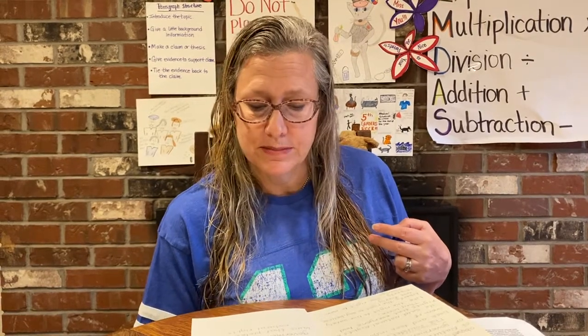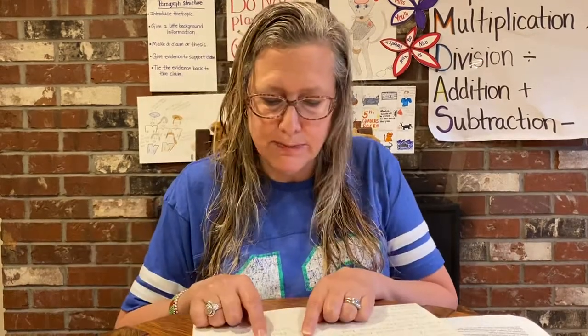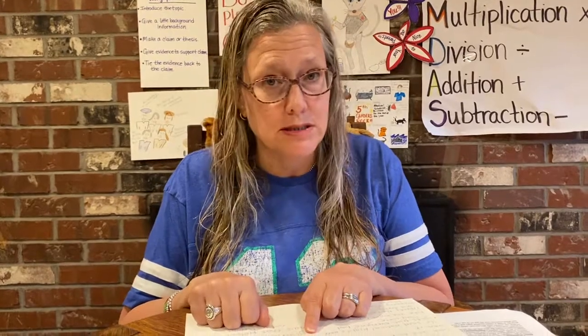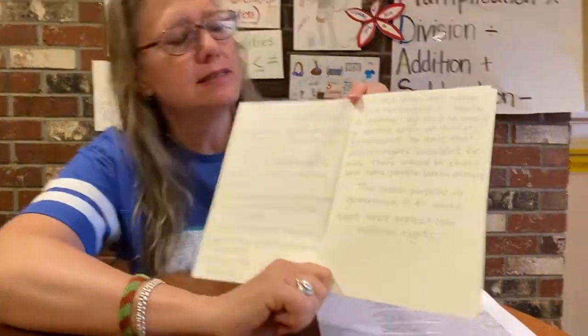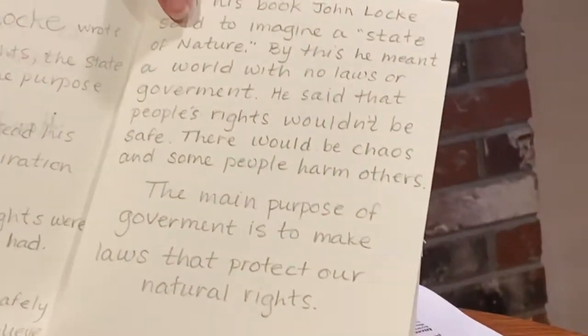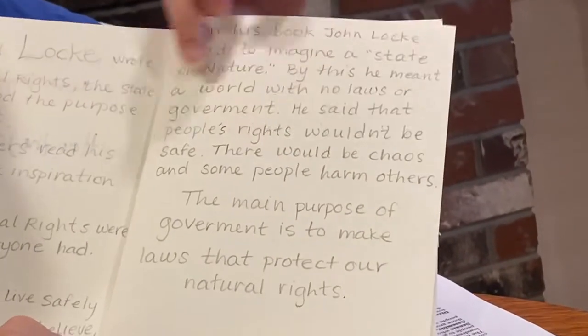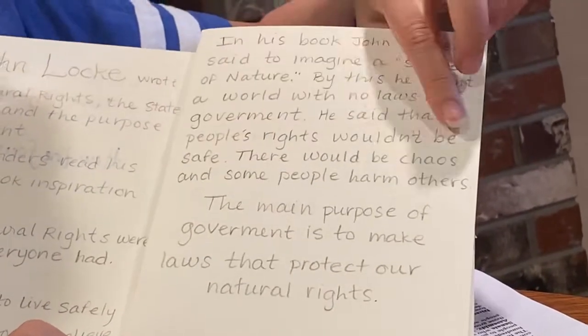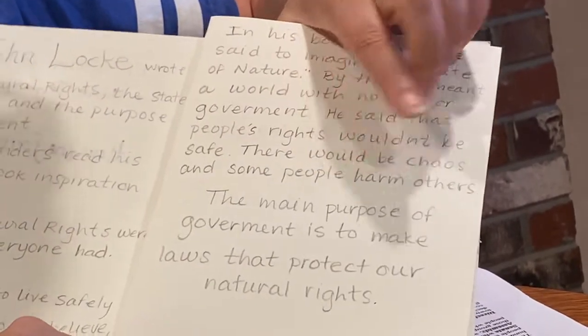He said that people's rights wouldn't be safe. There would be chaos and some people might harm others. So you want to write those three sentences: 'In his book, John Locke said to imagine a state of nature. By this, he meant a world with no laws or government. He said that people's rights wouldn't be safe — there would be chaos and some people might harm others.' I actually found a little typo I'll have to go back and fix later — good thing I wrote in pencil.